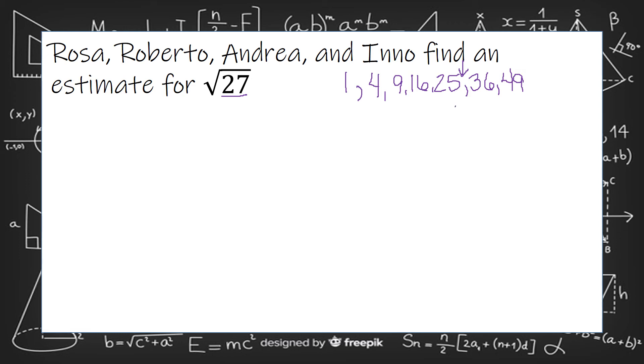The square root of 25 is 5, and the square root of 36 is 6, because that means what times itself gives us that number.